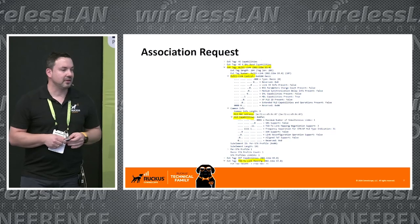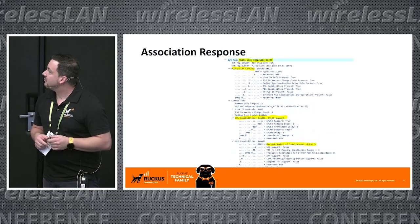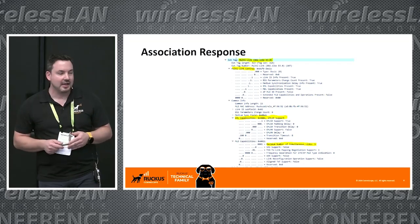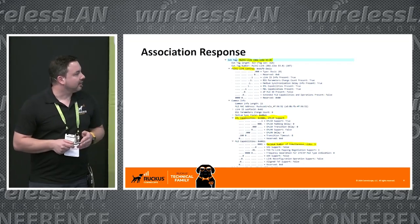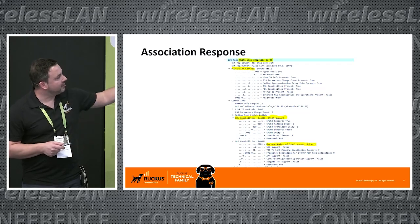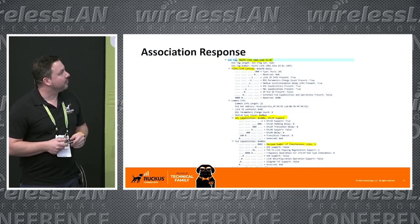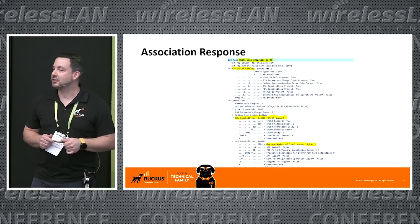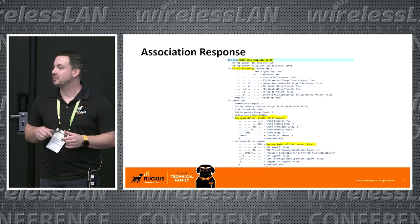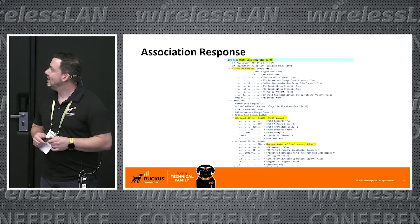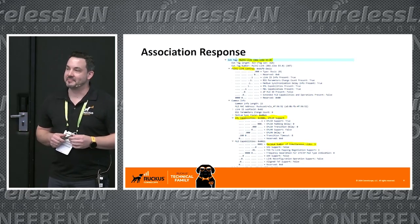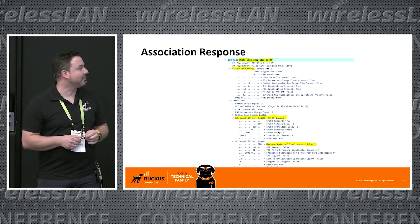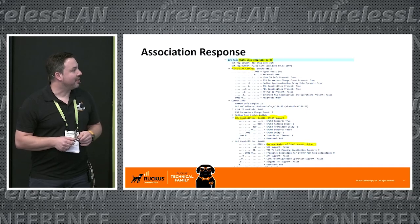Then we have association requests and association responses — we don't want to go into too much detail because basically they carry the same information as the beacons, and you can also see the common info fields here. This is interesting: if you don't see the common info field at all in your association request from a Wi-Fi 7 client to a Wi-Fi 7 access point, then it is not doing MLO, and it is not behaving like a Wi-Fi 7 device should — so maybe there is a bigger problem behind that.